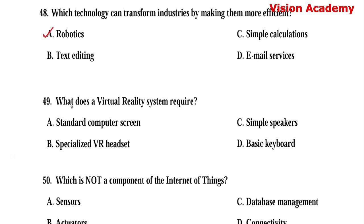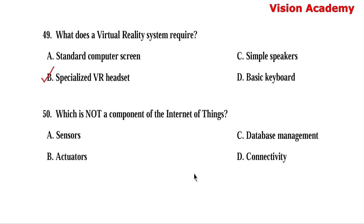Question number 49. What does a virtual reality system require? Option A: Standard computer screen. Option B: Specialized VR headset. Option C: Simple speakers. Option D: Basic keyboard. Here, option B, specialized VR headset, is the right answer.